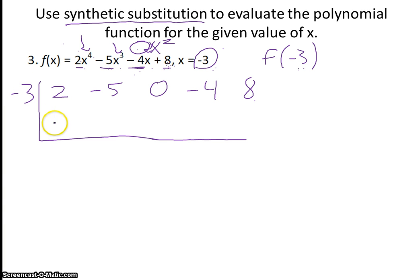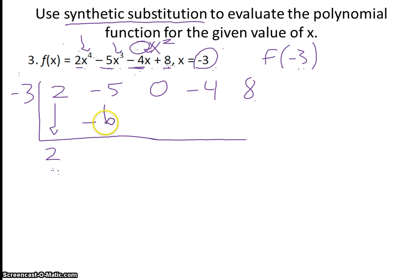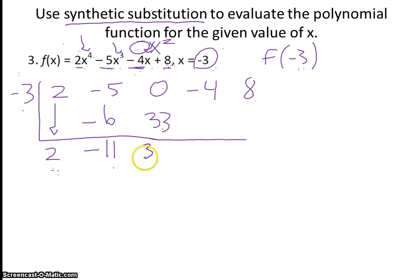The first step is to bring the 2 down. I'm always going to multiply the number brought down by the negative 3 on the outside. So 2 times negative 3 is negative 6. Then I add straight down: negative 5 plus negative 6 is negative 11. Then I multiply negative 11 times negative 3, which is positive 33. I add straight down, which gives me 33.